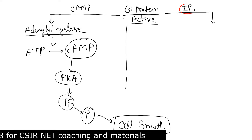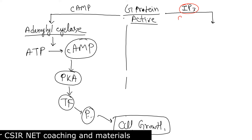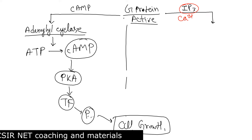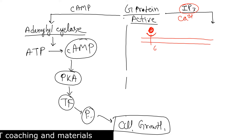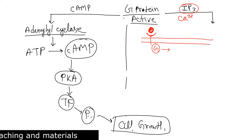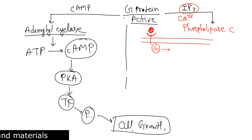Now let's discuss the IP3 pathway, which is little more elongated than the cyclic AMP pathway. The IP3 pathway is also known as the calcium-dependent pathway. Again, this is a cell membrane with a GPCR, and a ligand binds to the GPCR. Upon binding of the ligand to the GPCR, G-protein gets activated. This activated G-protein will activate one specific enzyme. Remember, in the cyclic AMP pathway it activated adenylyl cyclase — in the IP3 pathway it activates phospholipase C, or PLC.